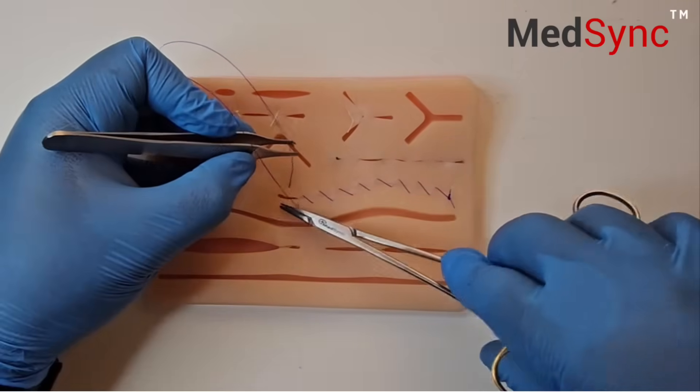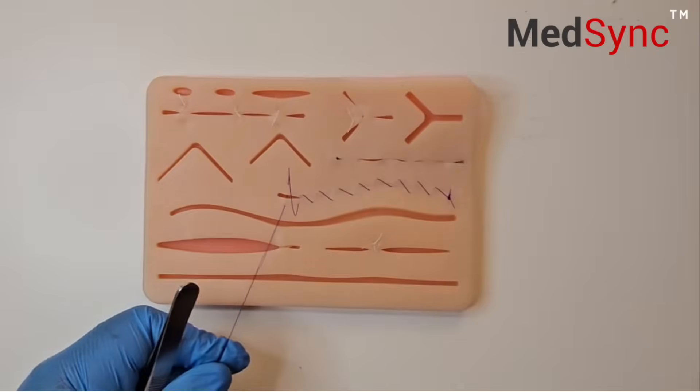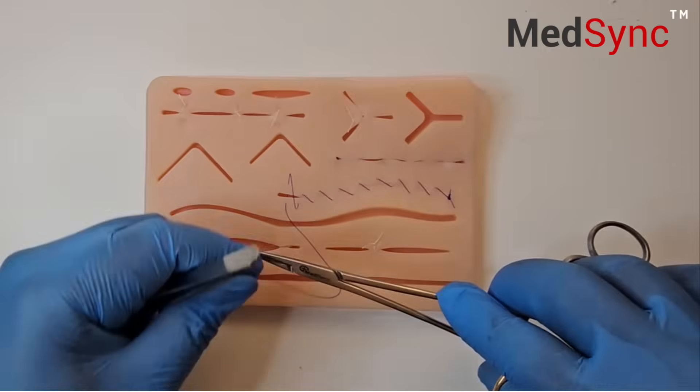Once you get to the end of the wound, you tie it like an interrupted, treating the loop like a single thread of short suture.